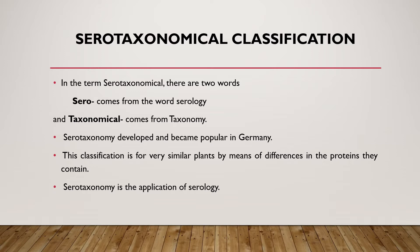This classification is for very similar plants, by means of differences in the proteins they contain. Serotaxonomy is the application of serology. In other types of classification of crude drugs we classify plants according to their alphabets, morphological characters, or chemical nature. But in serotaxonomy we classify plants according to the protein present in the plant — we group plants on the basis of protein present in those plants.